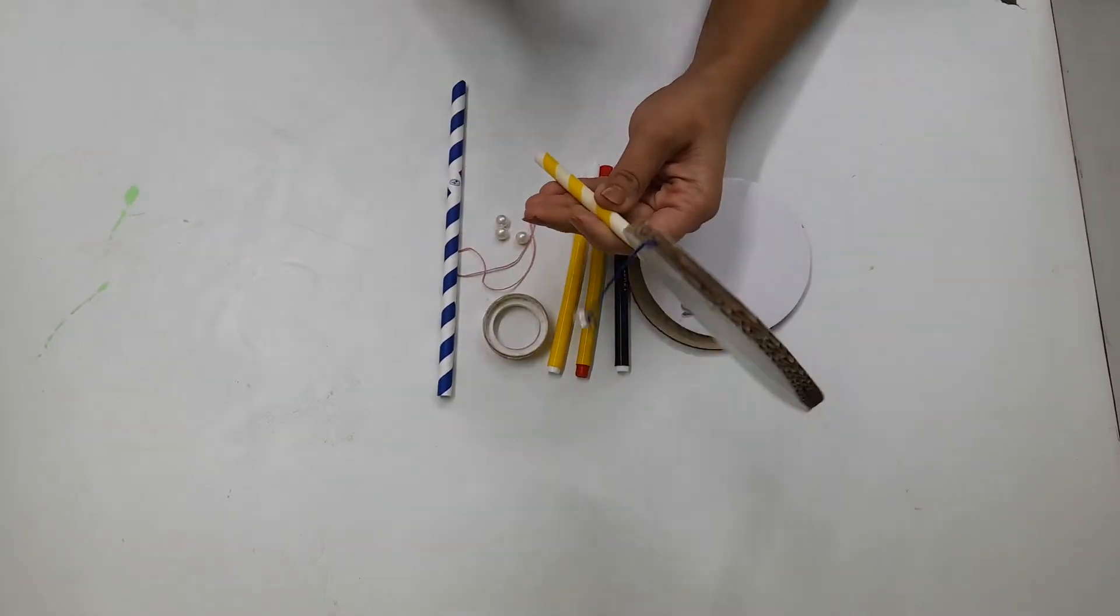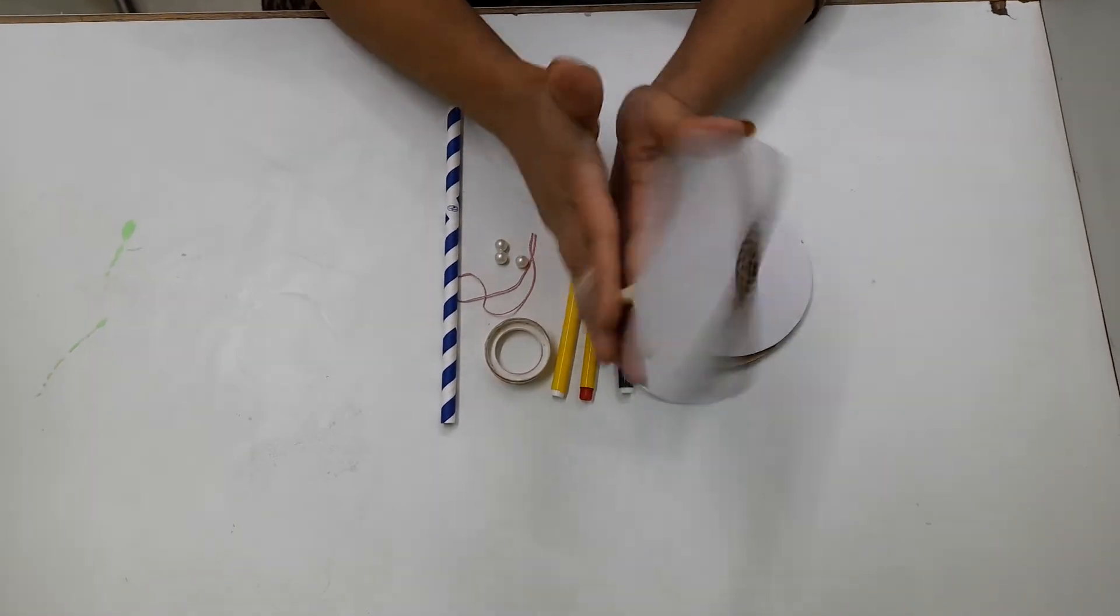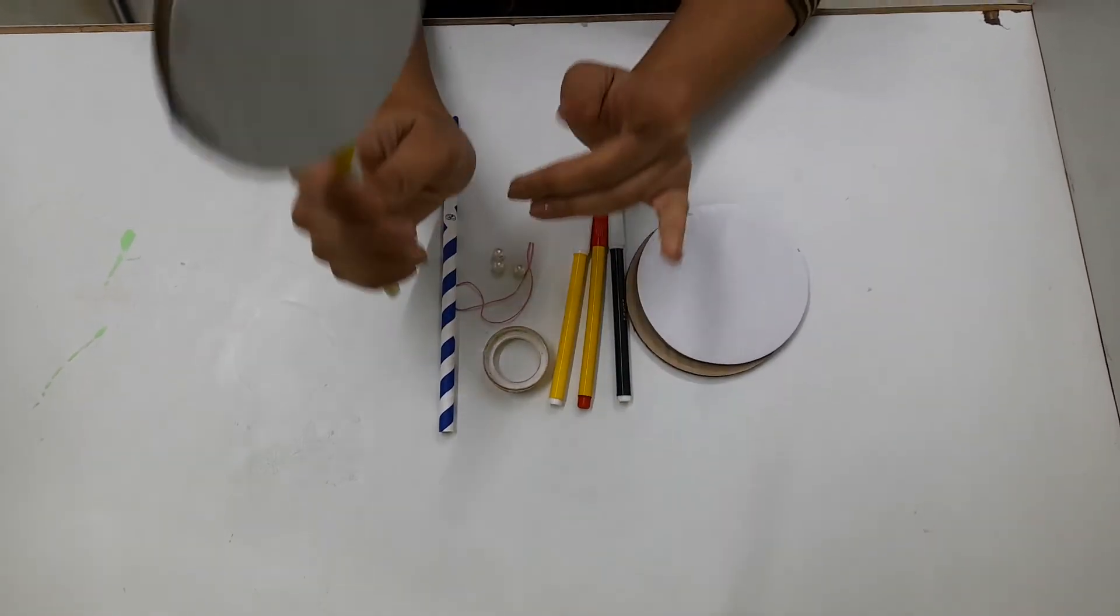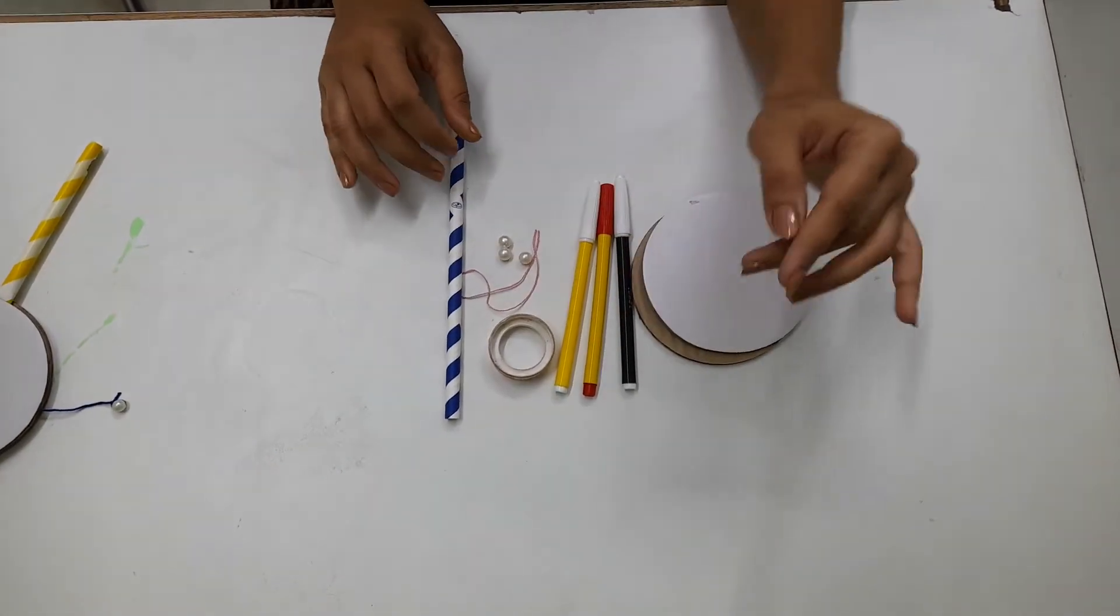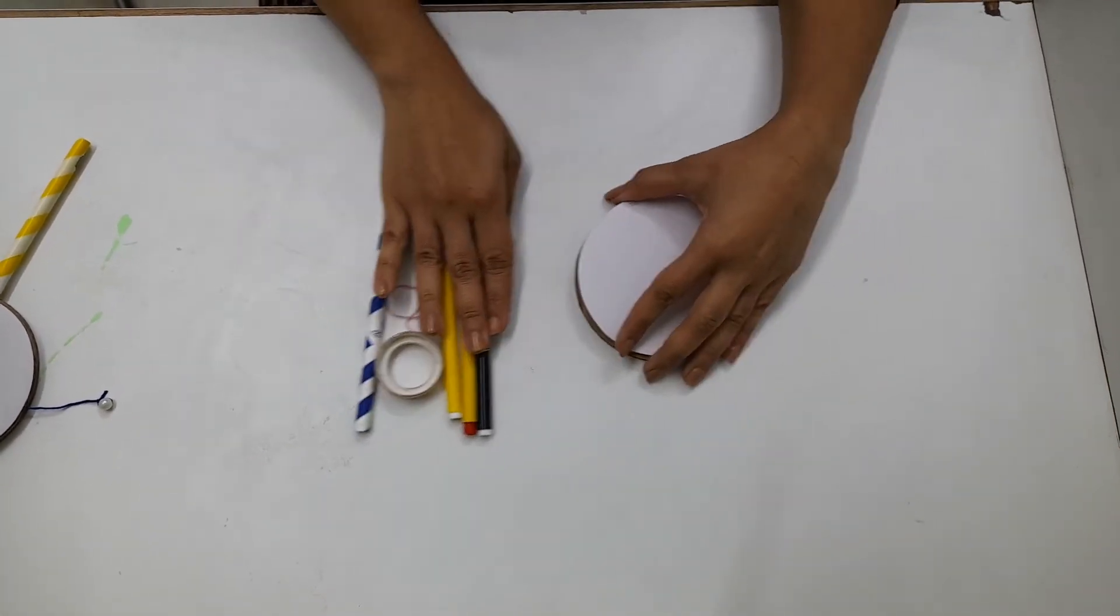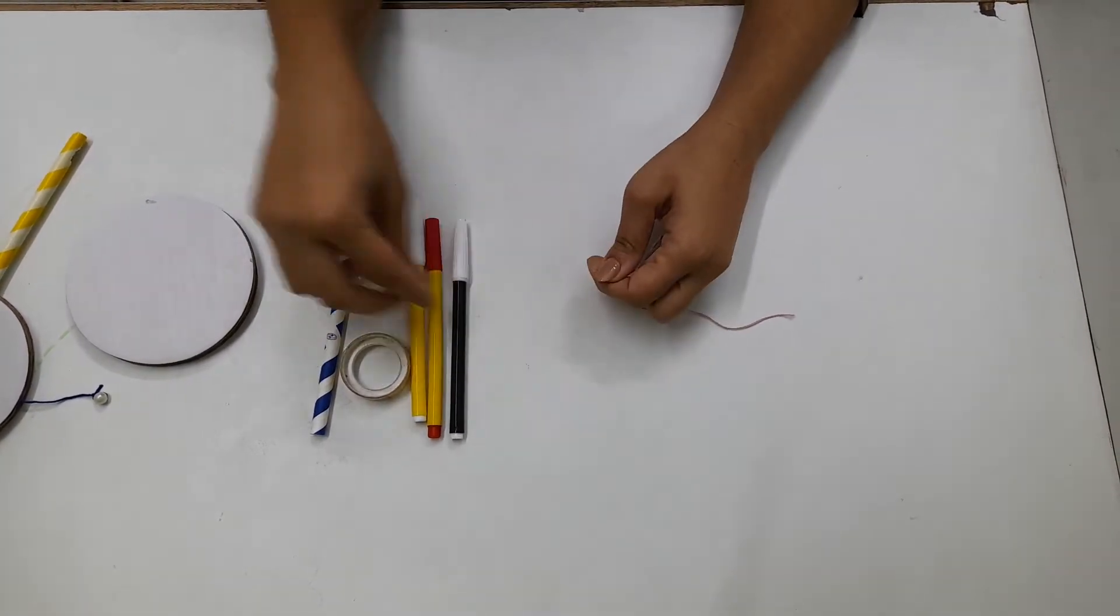This is already assembled so children can enjoy this pellet drum like this. If they want to make this pellet drum themselves, they can use these things. So first of all, insert these beads into the thread from both the sides.